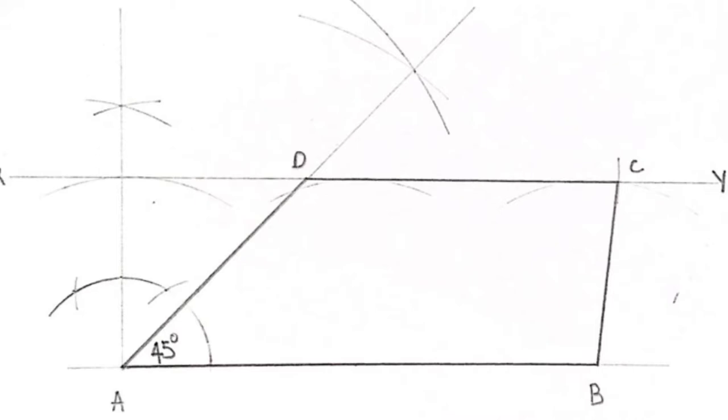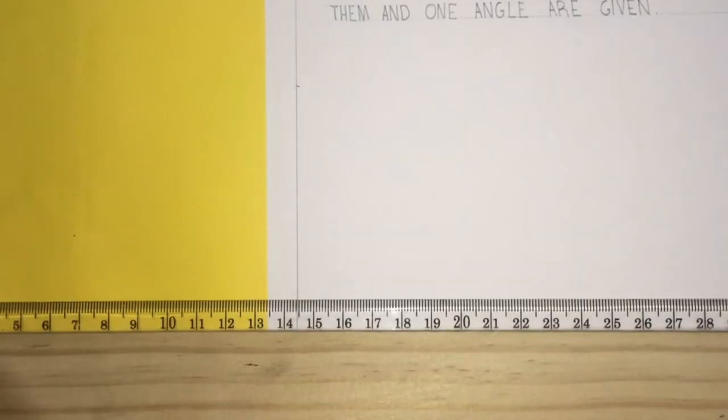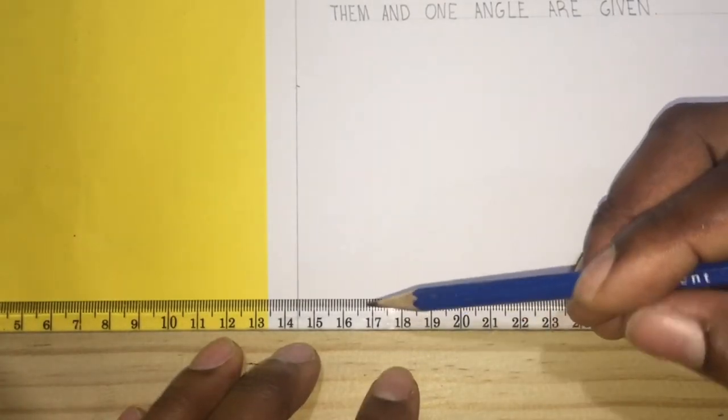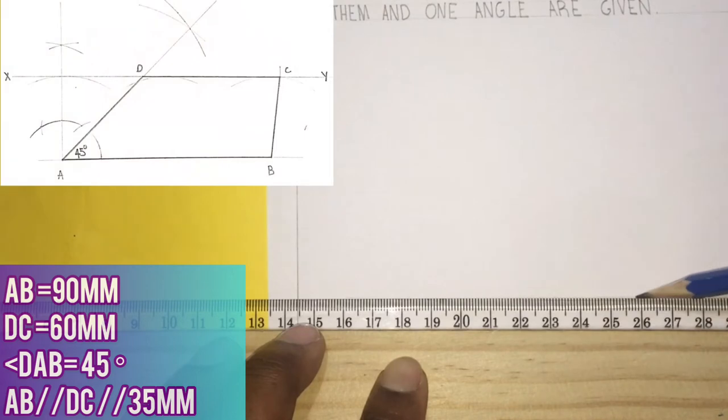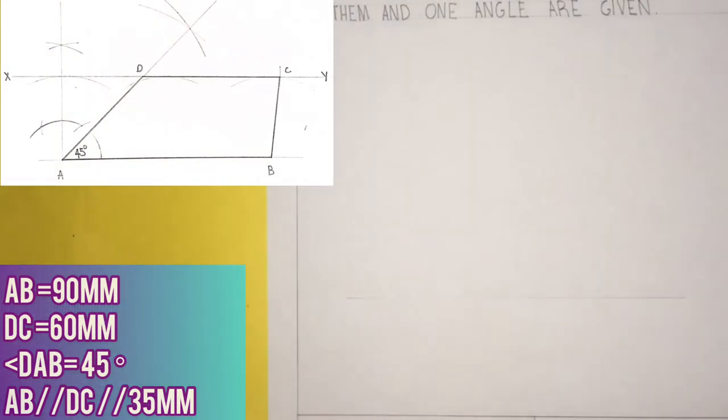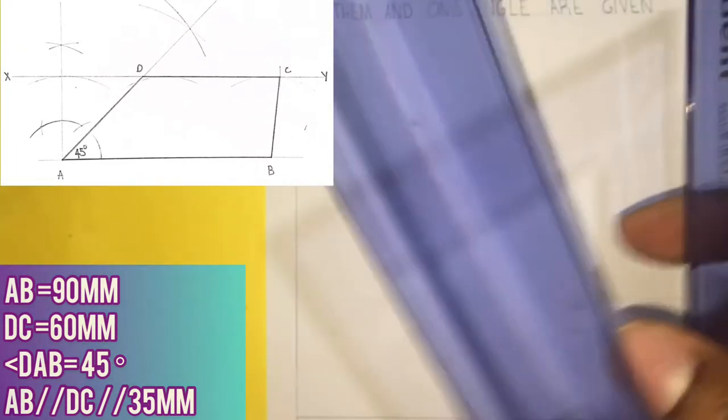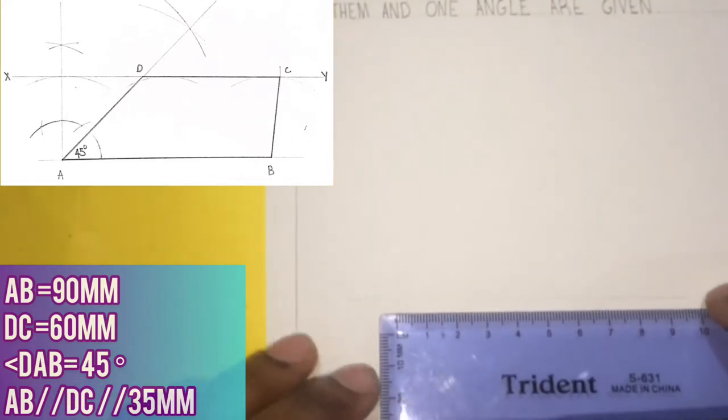I will now go ahead and draw my AB line to measure 90 millimeters. I will now outline my 90 millimeters on this line for clarity's sake and label it AB.